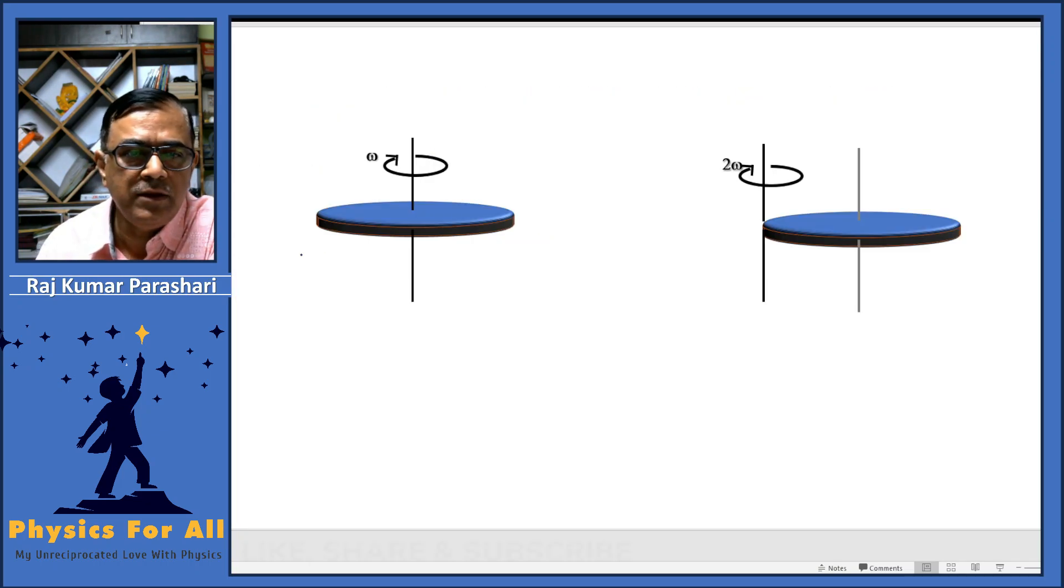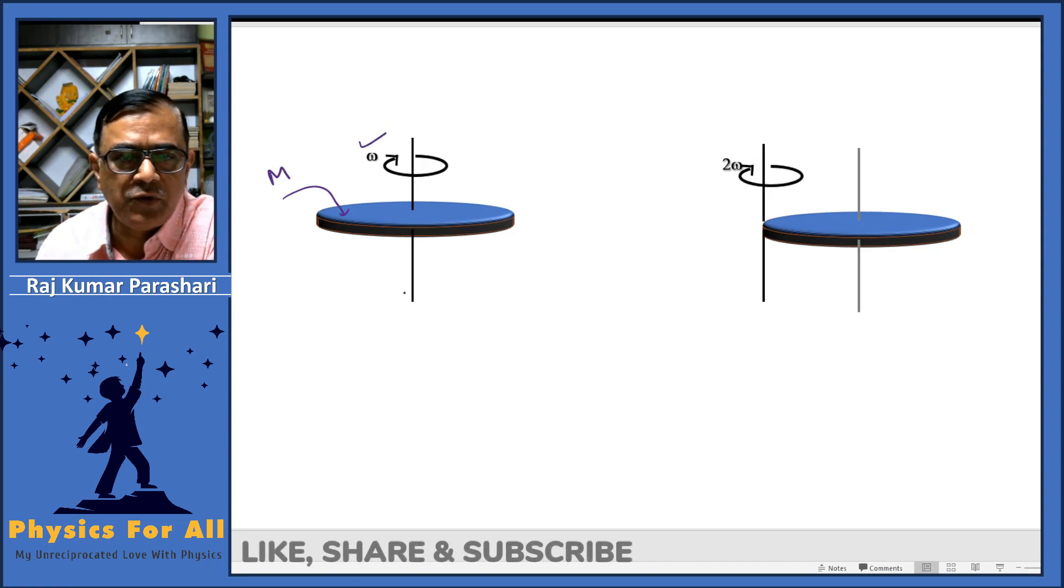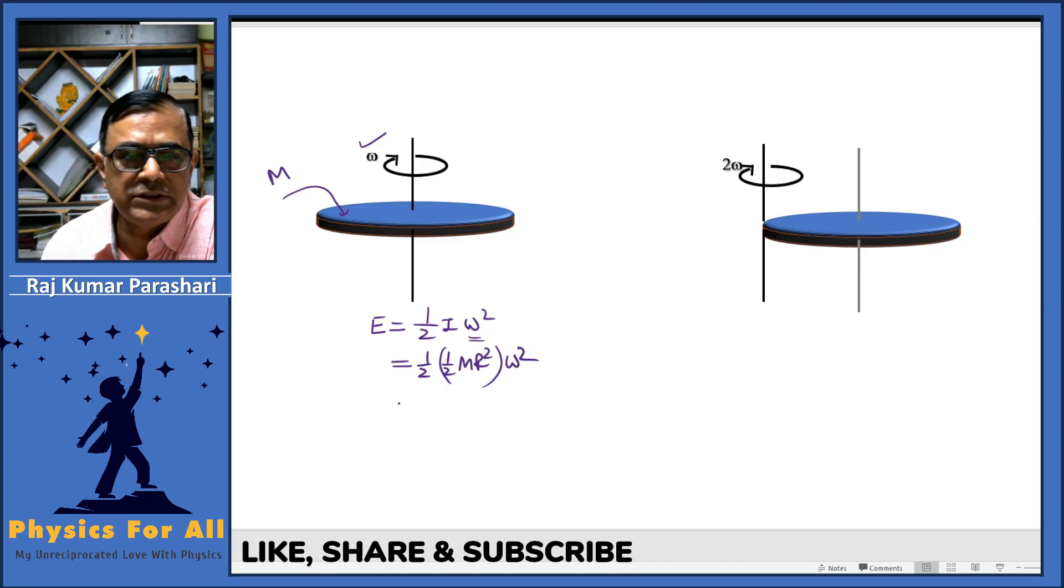We have a disc of mass M rotating with angular speed omega about its own axis. The rotational kinetic energy is 1/2 I omega^2, where I = 1/2 M R^2 omega^2. This equals 1/4 M R^2 omega^2.